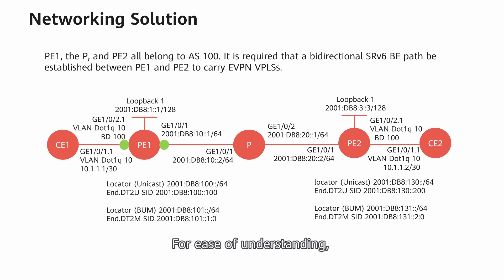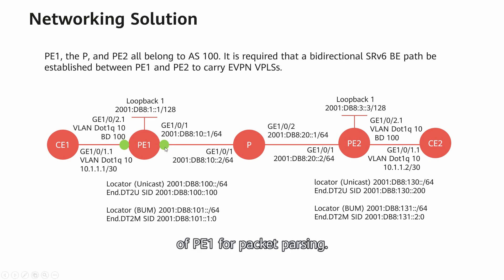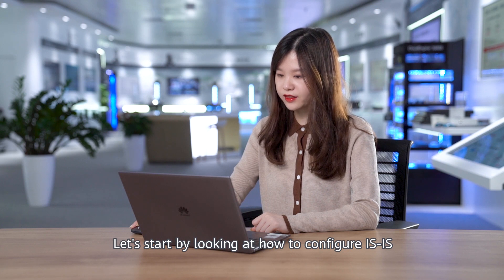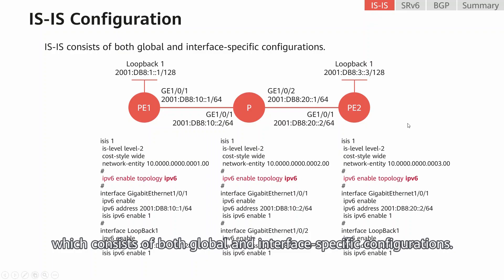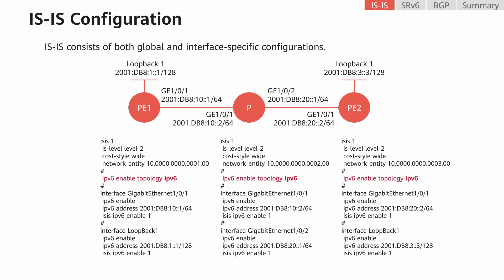For ease of understanding, we'll obtain packet headers from the two interfaces of P1 for packet parsing. Let's start by looking at how to configure IS-IS, which consists of both global and interface-specific configurations. Because IS-IS configuration methods are practically the same across all SRV6BE scenarios, they will not be described in detail.